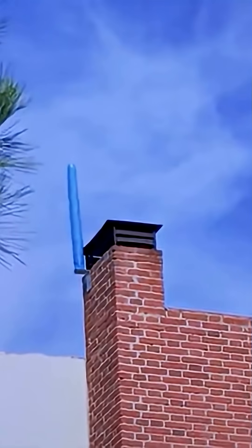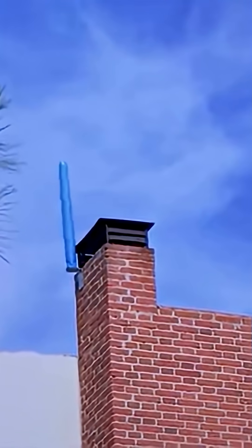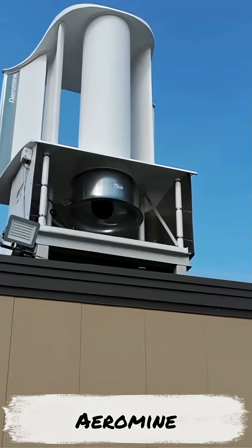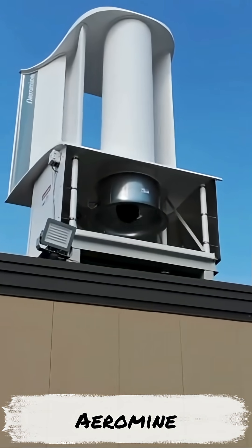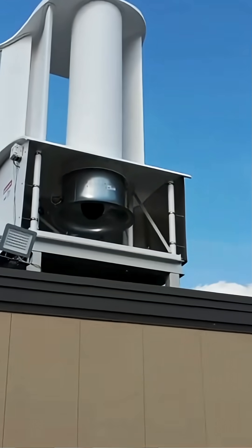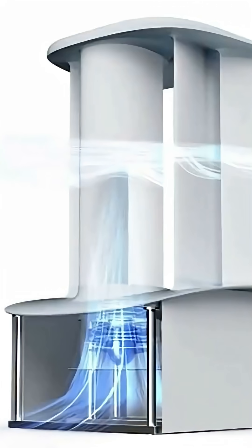This oscillating energy is then converted into electricity. Number two: Aeromine wind turbine. There are no blades on the outside in this one. It converts both the prevalent wind and the upward draft reflected off the building facade into electrical energy.